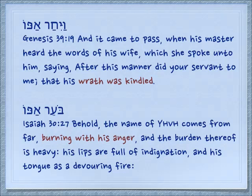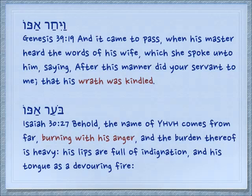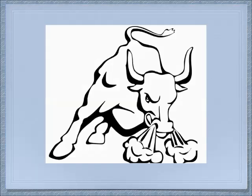Usually the idiom for anger — and in particular God's anger — has to do with the burning of the nose. In one case, Vayichar Apoh, the af here is in the singular, not in the dual as the nostrils of long-suffering. Yechar is burning. Genesis 39:19: 'And it came to pass, when his master heard the words of his wife which she spoke unto him, saying, After this manner did your servant to me — then his wrath was kindled.' Another word, Boer, is used with the nose — Boer Apoh — also for anger. Isaiah 30:27: 'Behold, the name of Yehovah comes from afar, burning with his anger, and the burden thereof is heavy. His lips are full of indignation, and his tongue is a devouring fire.' This is a common image if you think about the bull when he's angry — the smoke coming out of his nostrils, his anger is burning, and it's in his nose.